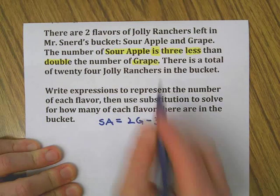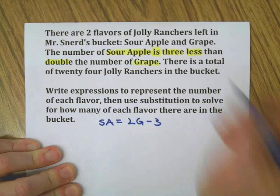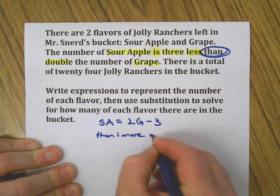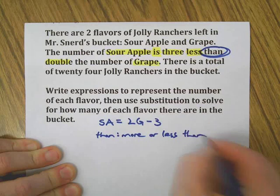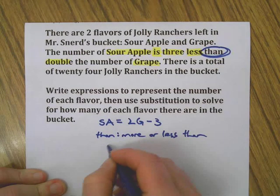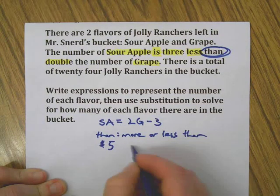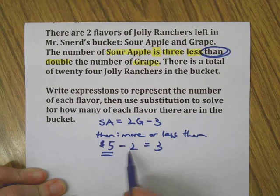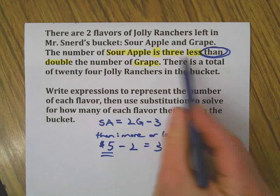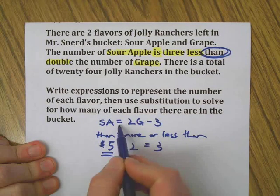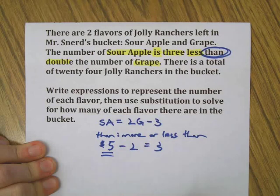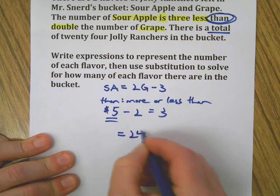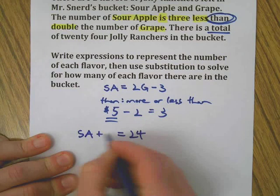Sour apple is three less than double the number of grape. Now, the reason I put the three afterwards, did you notice that up here? When you're reading the sentence, the three less than came first. But here's the key word: 'than.' Before you can have more or less than something else, you need the something else, right? Here's what I mean. If I have five dollars, and then I have two less than that, then I have three dollars. I have to have the five dollars first before I can use a comparative word like 'than' to either add or subtract from it. So, you need the thing first, then you can take three less or whatever. So, sour apple is three less than double the grape. So, there's our equation comparing the two quantities. Total is an equal sign, 24. And since we only have two flavors, that means sour apple plus grape equals 24.